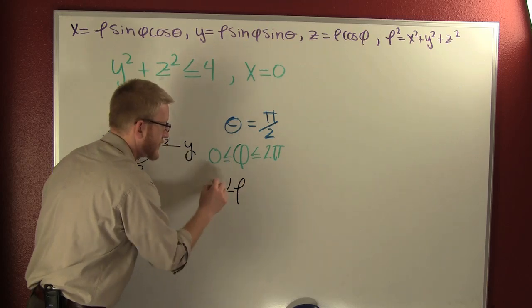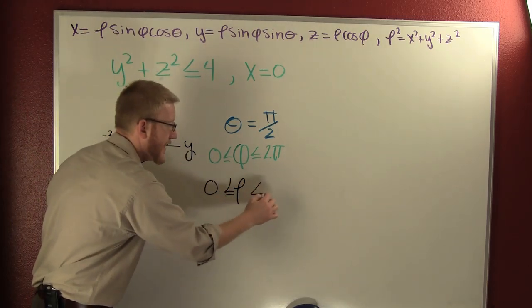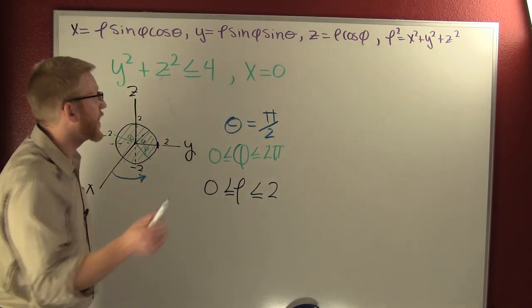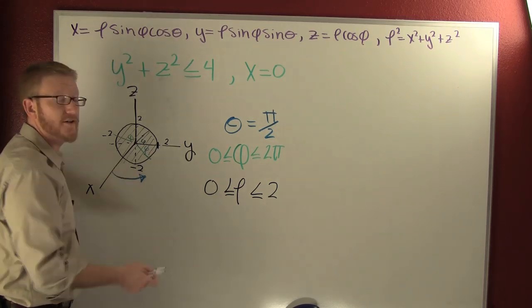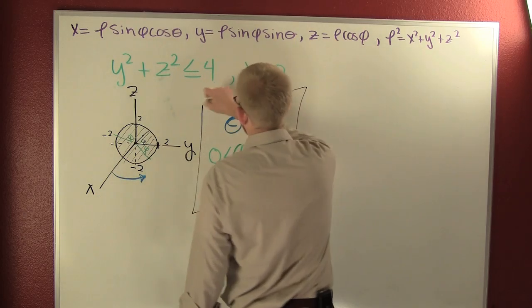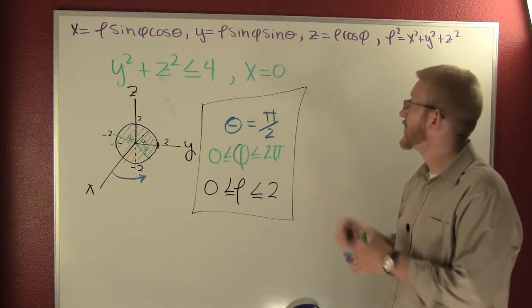Rho is anything between 0 and 2. So if we were going to describe this inequality from rectangular into spherical, we'd do it with the three constraints on the parameters of our function.